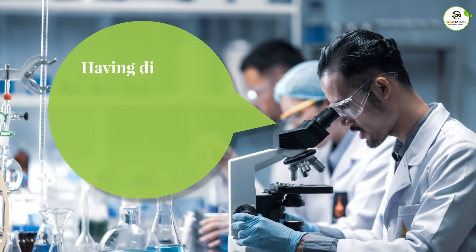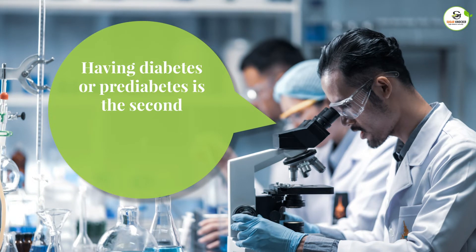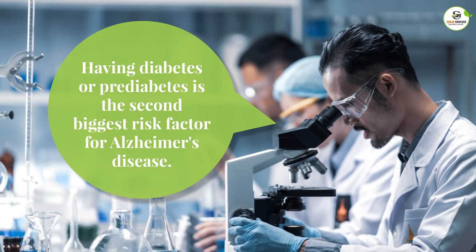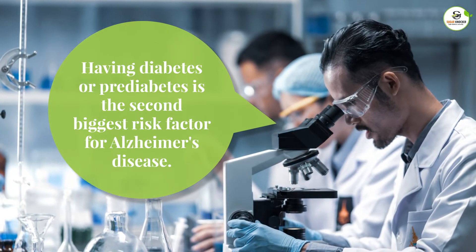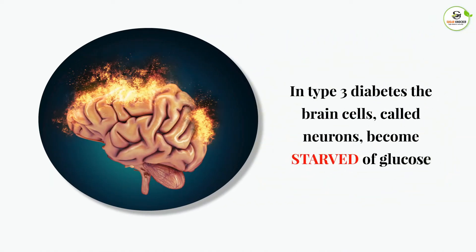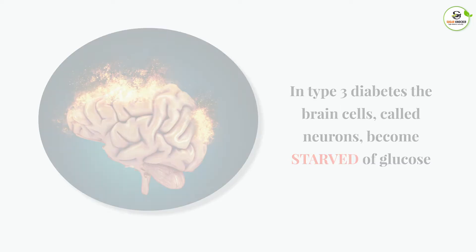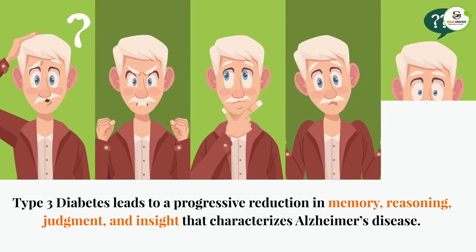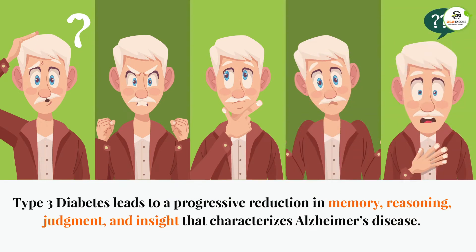According to research, advanced age and having diabetes or prediabetes is the second biggest risk factor for Alzheimer's disease. In Type 3 diabetes, the brain cells called neurons become starved of glucose, which in turn can lead to a progressive reduction in memory, reasoning, judgment, and insight that characterize Alzheimer's disease.